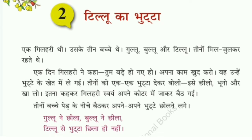All of you take your pencil and underline the meanings. Ek Gilhari thi — there was one squirrel. Gilhari ka matlab kya hai? Squirrel. Uske teen bachche thi — she had three children: Gullu, Bullu and Tillu. Teeno mil jhulkar rehte thi — they all three lived together. Mil jhulkar means together.